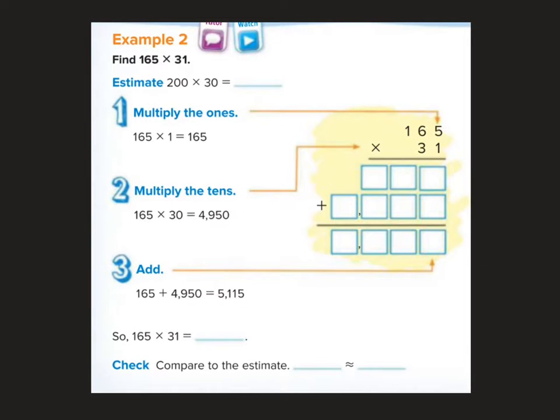So here we're going to find 165 multiplied by 31. So I'm going to estimate. I'm going to round it to the nearest hundred so I get 200 and 30. So I'm going to multiply 2 times 3 is 6, count the zeros, I have three zeros, so it's about 6,000 is what I should get.